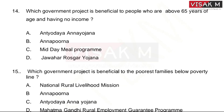Next question: Which government project is beneficial to people who are above 65 years of age and having no income? Options: A, Andhiyodaya Annyojana; B, Annapurna; C, Midday Meal Program; D, Jawahar Rozgar Yojana.